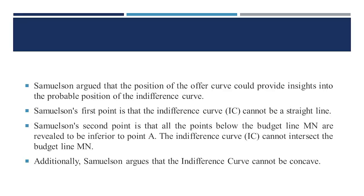Samuelson argued that the position of the offer curve could provide insights into the probable position of the indifference curve, and he provided a few aspects to support this argument. First, Samuelson's point was that the indifference curve cannot be a straight line like MN. When the consumer prefers point A, it reflects that all other points on MN are inferior to A, and hence the consumer cannot be indifferent between point A and all other points lying on MN. The argument is that when the consumer chooses point A, all other points on MN are considered inferior, consistent with the assumption that the consumer prefers more to less.